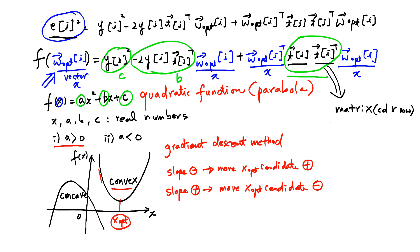If this matrix is positive definite, then our function is a convex function, strictly convex function. And if our function is convex function, then you can use gradient descent method to find out this w-opt of i.